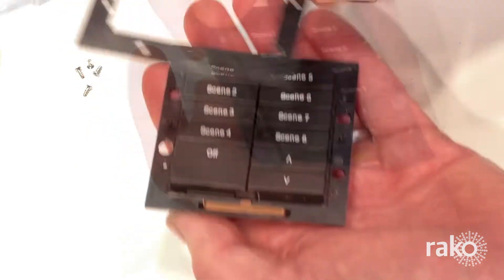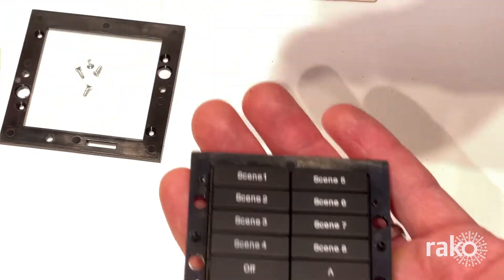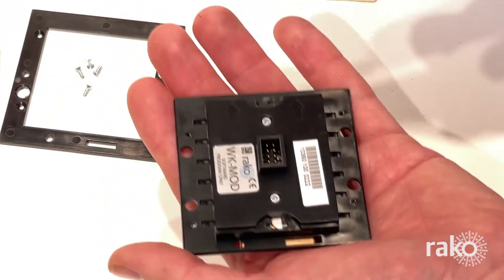Once you've removed all the front screws you can take off the bezel and put it to one side. Flip the keypad over and take out the remaining screws.